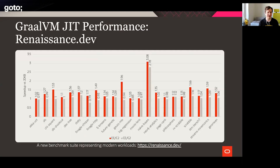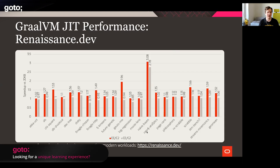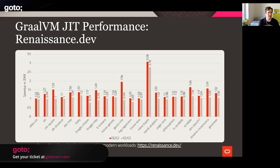How much faster, you ask? Reasonably faster. Here I'd like to point out a benchmark suite called Renaissance — it's a newer benchmark suite consisting of individual benchmarks from different projects. You can see there are stream-based benchmarks, some Rx/reactive extensions, some Neo4j analytics — a very memory-heavy workload — and some Scala dotis, the Scala compiler.